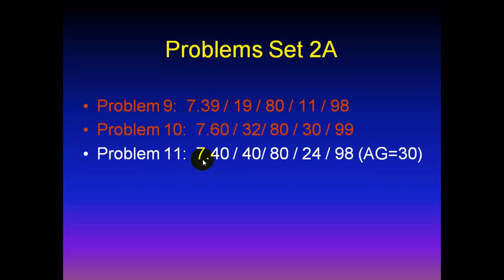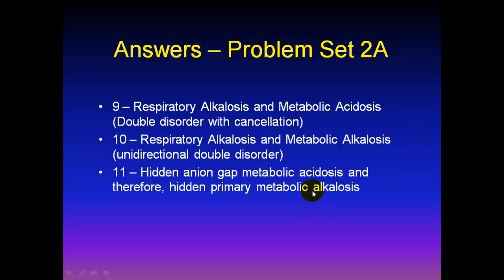Third problem: a completely normal blood gas with an elevated anion gap. This must have a hidden anion gap metabolic acidosis and also a metabolic alkalosis, keeping the bicarb higher than would be expected. Here are the answers for your records.